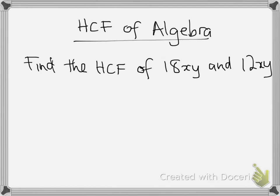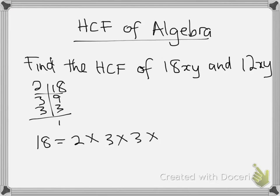For my 18 here, divided by 2, this is 9. Divided by 3, this is 3. Divided by 3, this is 1. So it means for 18, 18 is equal to 2 times 3 times 3, then I will take my terms here, x and y, times x times y.